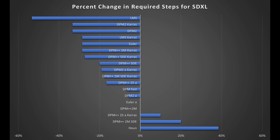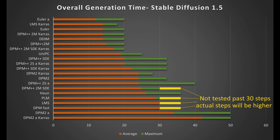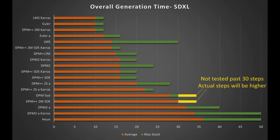For most samplers, SDXL required slightly fewer steps to get a good result. However, Hewun was an exception and actually required more steps. Just comparing steps isn't good enough because there are fast and slow samplers, so here's a comparison showing the results after adjusting for processing speed. In general, Karras samplers tended to be a bit faster than the non-Karras versions, and most samplers fell within a relatively narrow range.